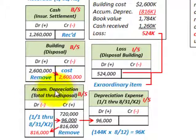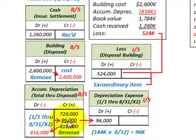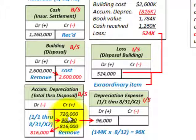Then we address accumulated depreciation, which is a contra account to the building account. We need to calculate the total accumulated depreciation through the date the building was destroyed. We had $720,000 at the beginning of the year, plus $144,000 per year times 8 months equals $96,000 additional depreciation. That gives a total accumulated depreciation of $816,000, which we remove off the books.